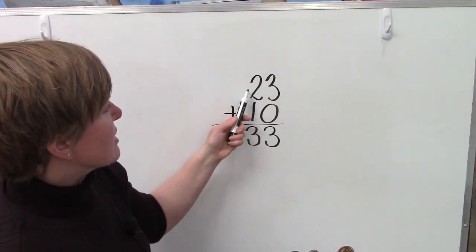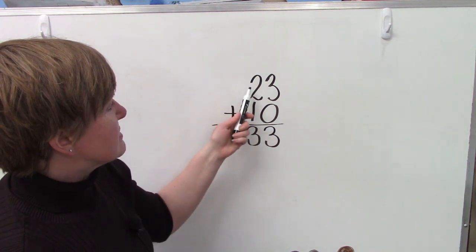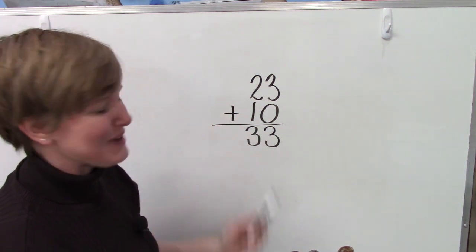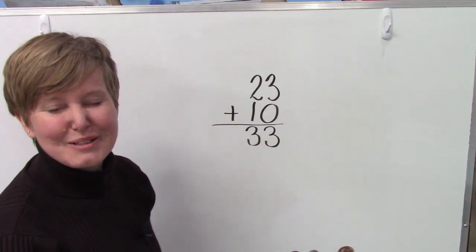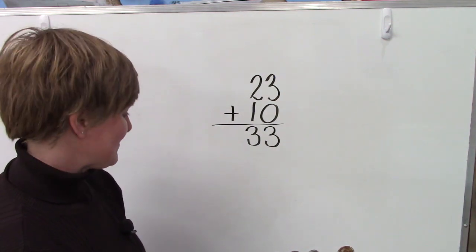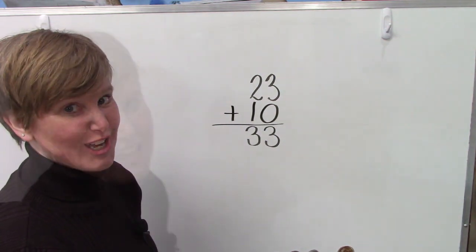Here we have 23. Instead of a 2 in the tens place, we ended with a 3 in the tens place because it was following the pattern. Let's try another one.